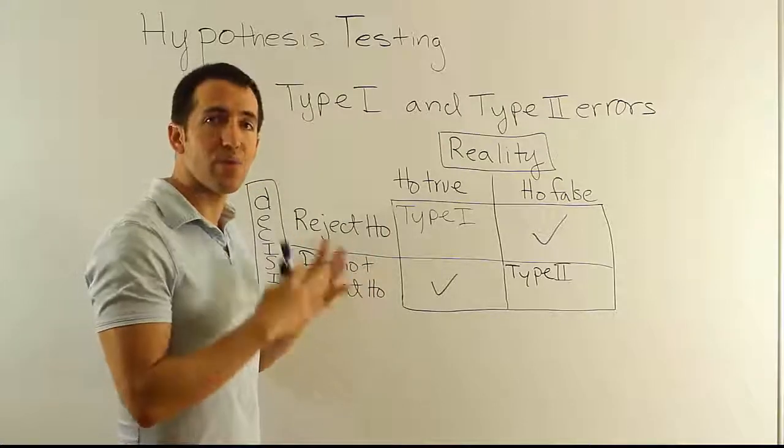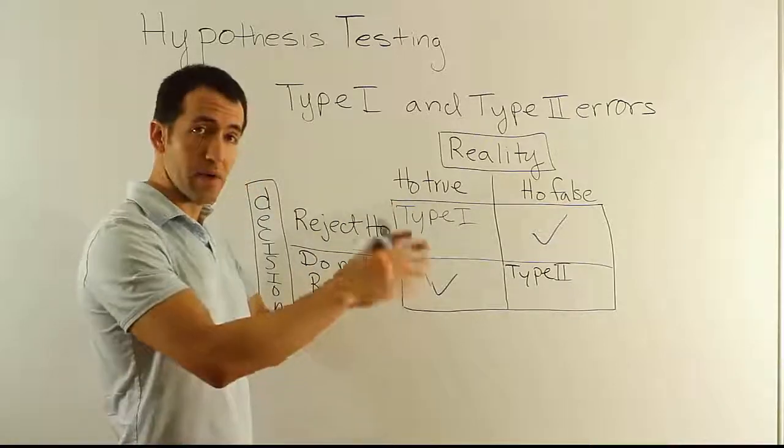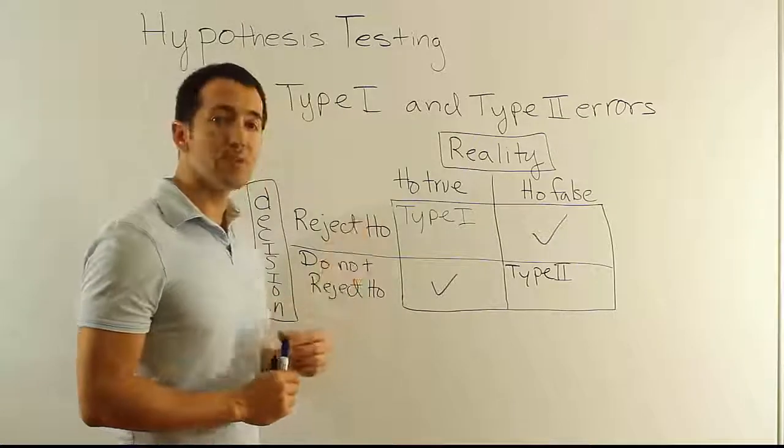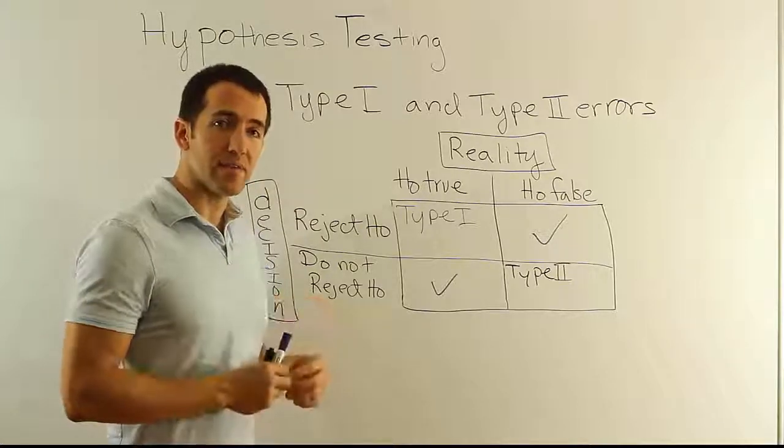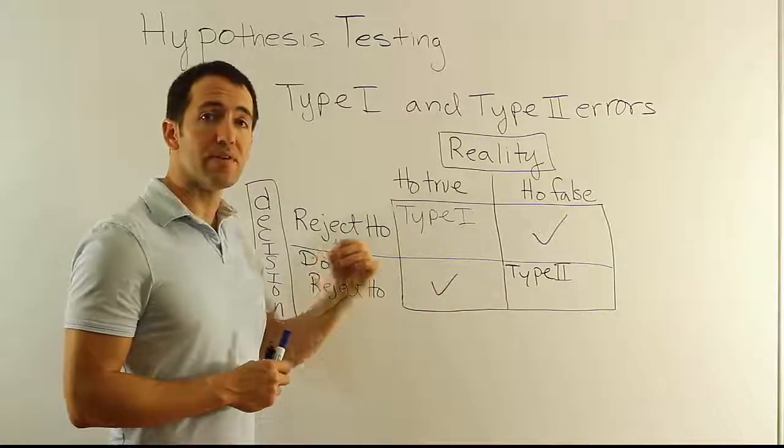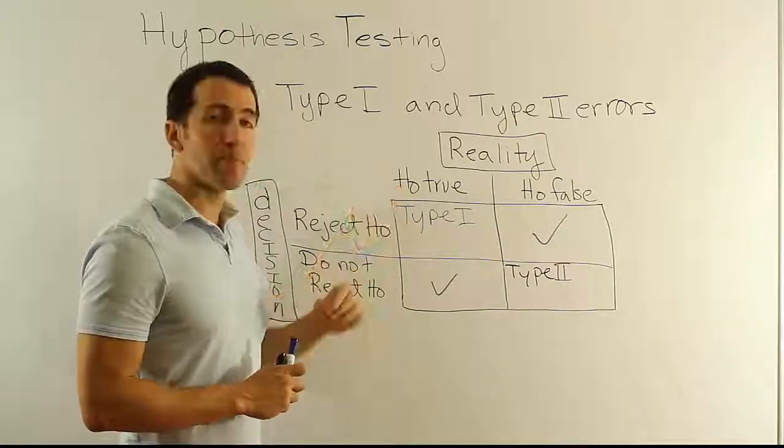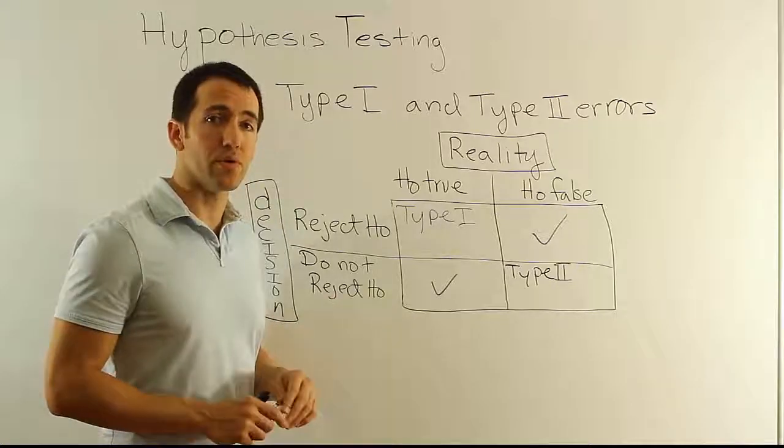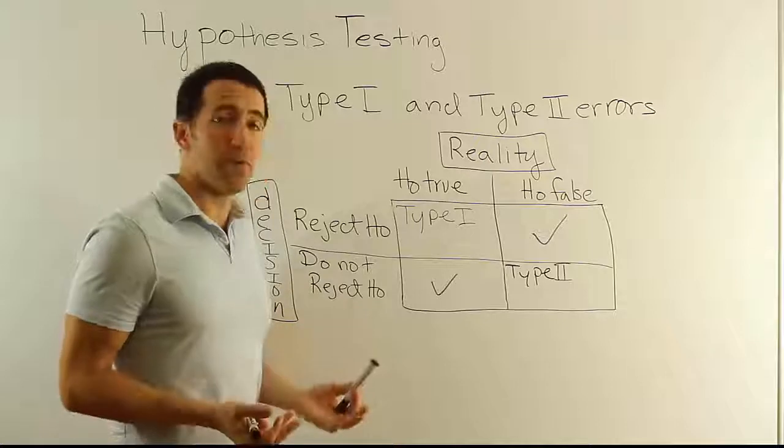In our criminal system, the null hypothesis, the status quo hypothesis, that's what we deem to be true typically from a historic sense. So what's our status quo hypothesis in a criminal trial about a person's innocence? Well, we would generally say that the status quo hypothesis is that a person is innocent until proven guilty. That's the general idea in America, that the innocence of a person is assumed to be true until we can convict them and show that it's no longer true in a court of law. But we know that those courts of law are not perfect.